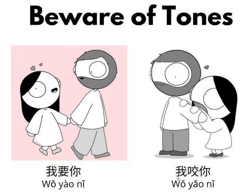And then here we have 我, same as the previous. Now this is different — 要, 要. So different tone, right? Fourth tone, third tone — 你. 我要你. So this 要 means bite.